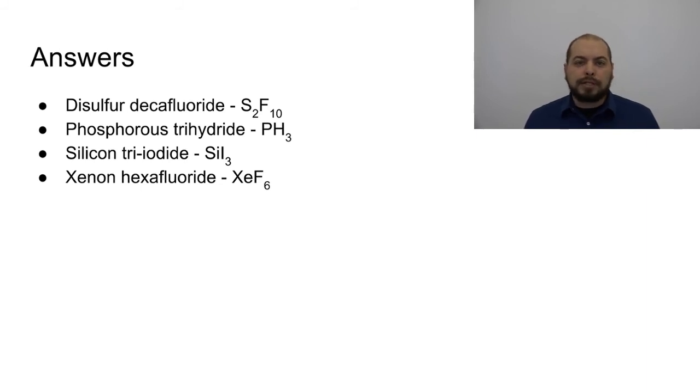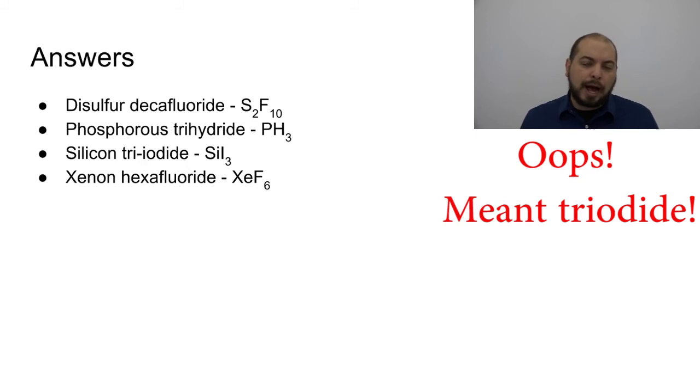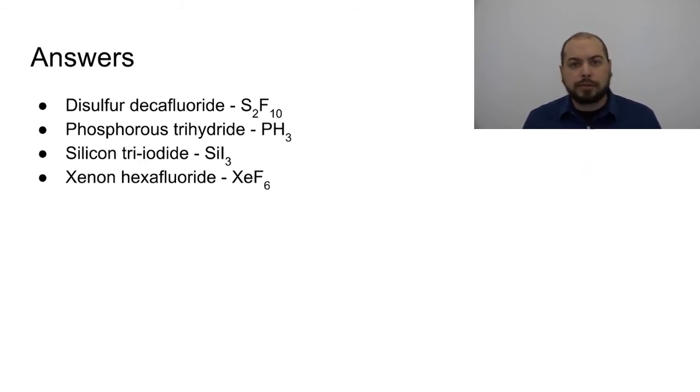The third example here is silicon tetraiodide. Silicon, again, no prefix, which means there's just one of it, so we're just going to put SI by itself. Followed by tetraiodide. That means there's four iodine atoms, which means we are dealing with SI, capital I for iodide, four. Alright. Be careful with the capital letters and lowercase letters, because if you put two lowercase i's, you're in trouble. So it's SI, capital I, four.